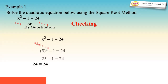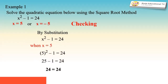To determine whether the roots satisfy the given equation, we check by substitution. The original equation is x² - 1 = 24. When x = 5, substituting gives us 5² - 1 = 24. Simplifying, 25 - 1 = 24, therefore 24 = 24. That means 5 is a solution.